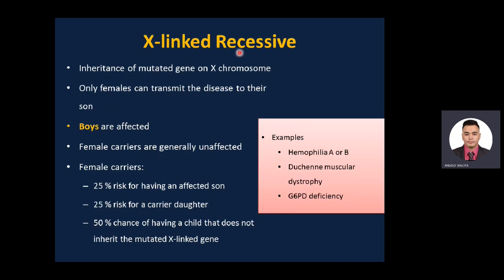X-linked recessive is inheritance of a mutated gene on the X chromosome. Only females can transmit the disease to their sons; boys are affected and female carriers are generally unaffected. Female carriers have a 25% risk of having an affected son, 25% risk of a carrier daughter, and 50% chance of having a child not affected or carrying the mutated gene. Examples: hemophilia A and B, Duchenne muscular dystrophy, and G6PD deficiency.